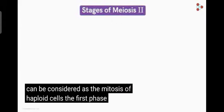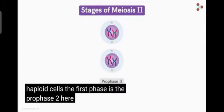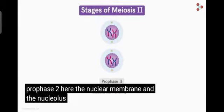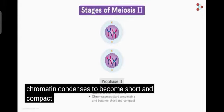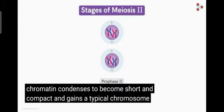The first phase is the prophase II. Here, the nuclear membrane and the nucleolus begin disappearing. The chromatin condenses to become short and compact and gains a typical chromosome structure.